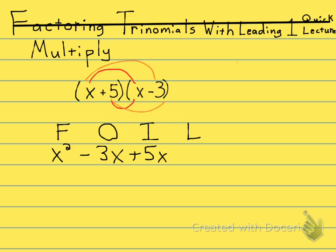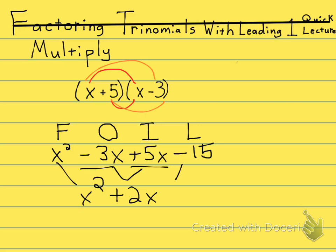And then I'm going to multiply the last two. I have a positive 5 times a negative 3. A positive times a negative is a negative, so it's going to be negative 15. Every time you FOIL, you're going to look to see if you can combine like terms — distribute, combine like terms. We see here that negative 3X plus 5X is going to give me plus 2X. So I have X squared plus 2X minus 15.